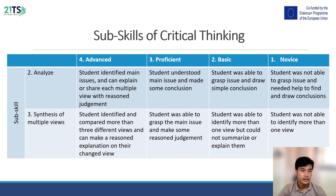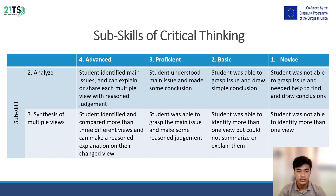Sub-skill two: Analyze. At the advanced level, students identify the main issue and can explain or share multiple views with reasoned judgment. At the proficiency level, students understand the main issue and make some conclusions. At the basic level, students are able to grasp the issue and draw simple conclusions. At the knowledge level, students are not able to grasp the issue and need help to find and draw conclusions.